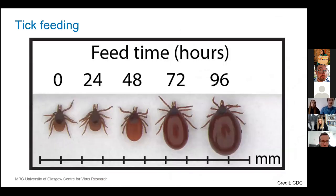Once they start to take this meal, larvae usually do this for two to four days, while nymphs do this for four to six days, and adults have been recorded to feed for up to 10 days before becoming fully engorged. During this feeding process, a tick can actually expand up to 200 times its original volume.